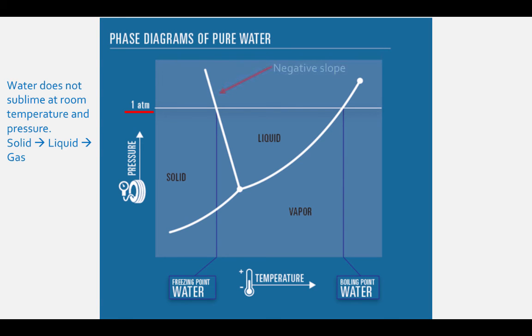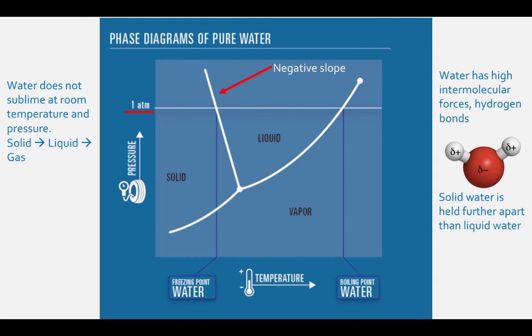Also, water's solid-liquid line has a negative slope. This is because water has high intermolecular forces and is held together with hydrogen bonds.